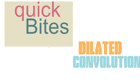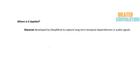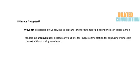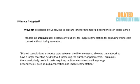Welcome to a quick video on bytes of CC. Today we are going to learn about dilated convolution. Before we get into what it is, let's look at some important applications. One is WaveNet, developed by DeepMind, which generates audio signals from mel spectrograms using dilated convolution to capture long-range temporal dependencies. It is also used in models like DeepLab for image segmentation, which partitions an image into multiple parts for capturing multi-scale context without losing resolution.